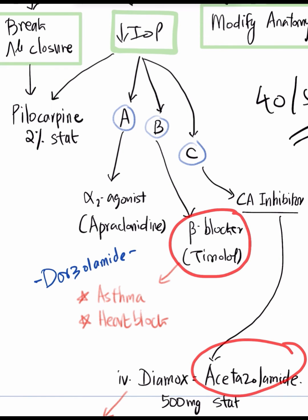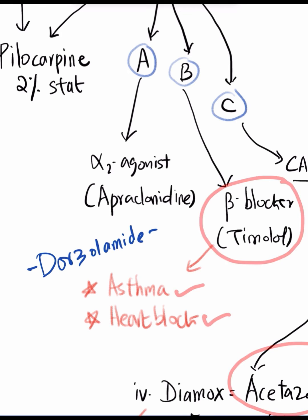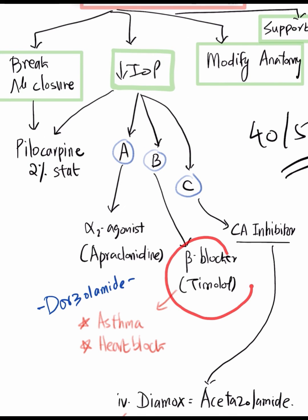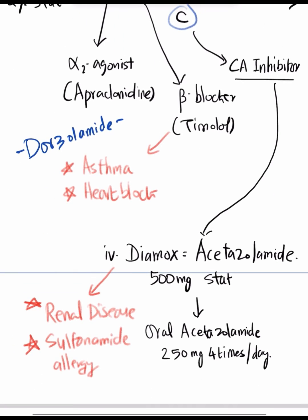Beta blockers such as timolol are contraindicated in asthma or heart block; a safer alternative is dorzolamide. Acetazolamide is contraindicated in renal disease and sulfonamide allergy. Standard dosing is intravenous diamox 500mg stat, or oral diamox 500mg stat, then switched to oral acetazolamide 250mg four times a day — always give a high loading dose first, then reduce for longer-term treatment.